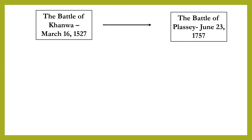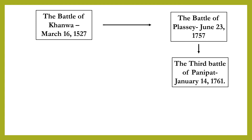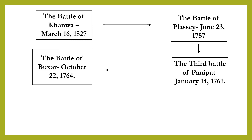Then we will draw an arrow downward to show the direction of the flow of the next event. In the box, you will write the third event: the third Battle of Panipat, January 14, 1761. Again, you will draw an arrow to show the direction of the next point. Then write down the fourth point: the Battle of Boxer, October 22, 1764.